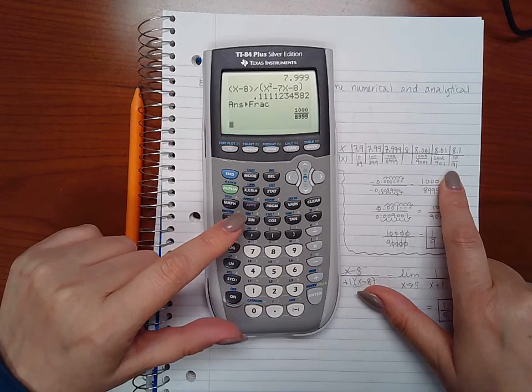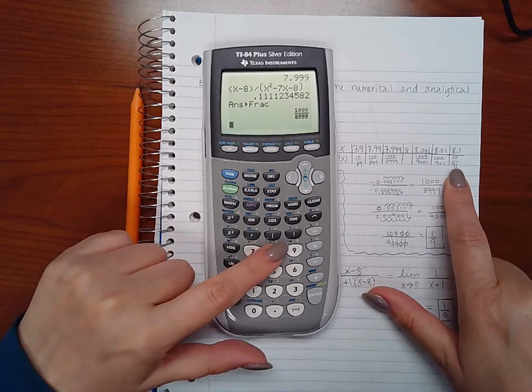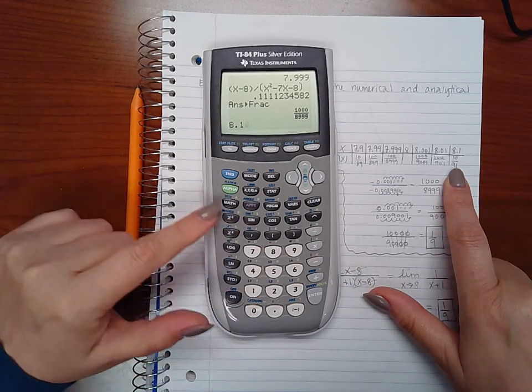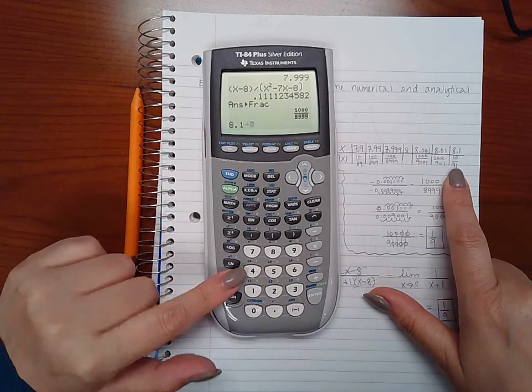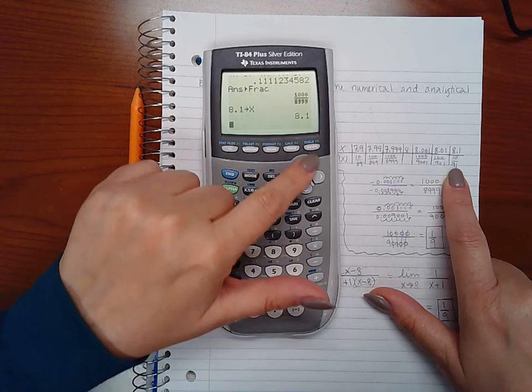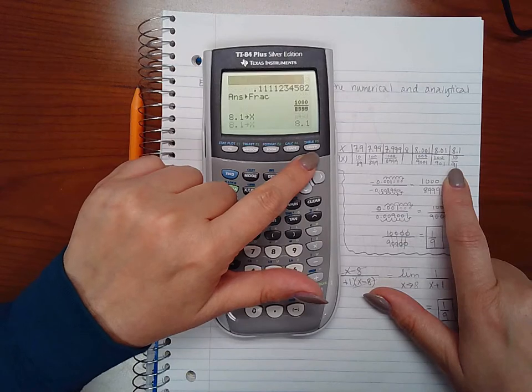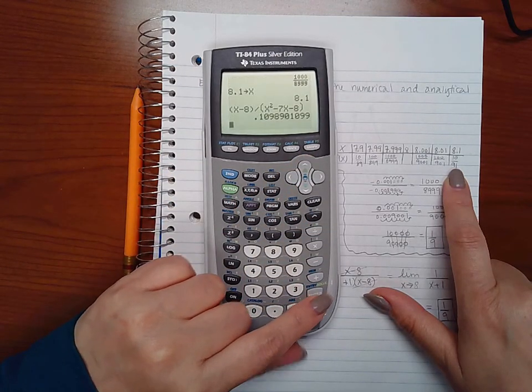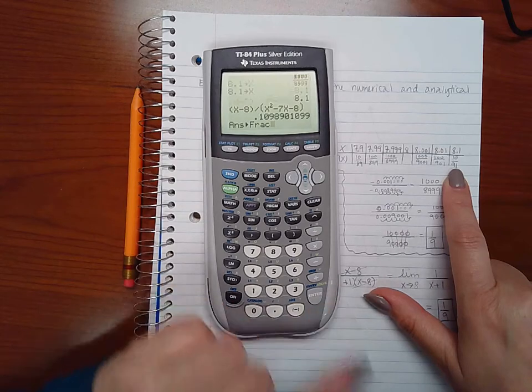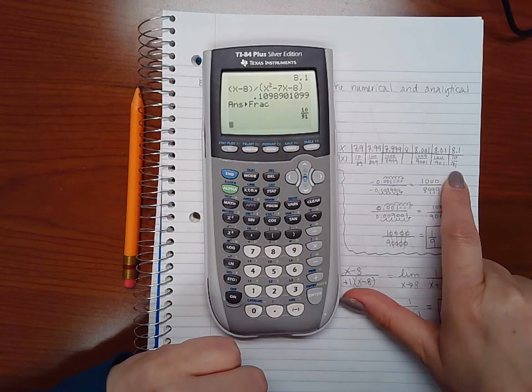So then what I end up with is 8.1, store x, and I'm going to go back to my function and hit enter and change it to a fraction so I get 10 over 91.